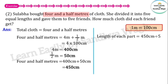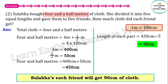450 centimeters divided by 5 — we divide 450 centimeters by 5, and the answer is 90 centimeters. So the final answer is: each of Sulabha's friends will get 90 centimeters of cloth.